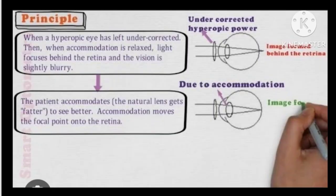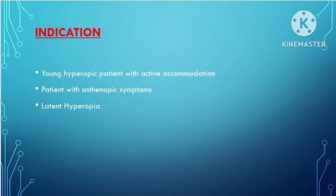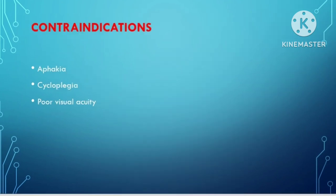The principles of the fogging test are as discussed: our aim is to prescribe maximum plus and minimum minus with relaxed accommodation. Indications for the fogging test include young hyperopic patients with active accommodation, patients with asthenopic symptoms, and latent hyperopia. Contraindications include aphakia, cycloplegia, and poor visual acuity.